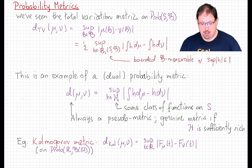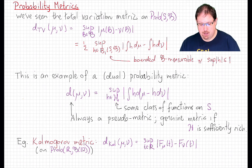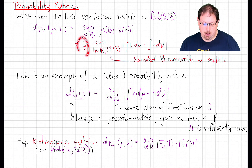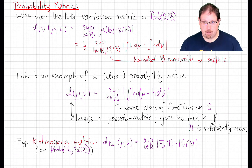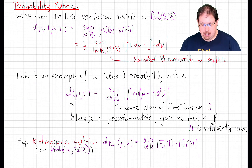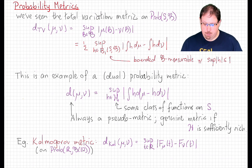That is, a metric of this precise form — we decide to measure distance by testing against some functions, and the distance measure's strength is determined by which functions we're allowed to test against. So the metric is determined by this class of functions h. In the total variation distance, the class of functions is the bounded measurable functions. That's too strong a metric for the Central Limit Theorem, so we need to take a smaller class of functions.